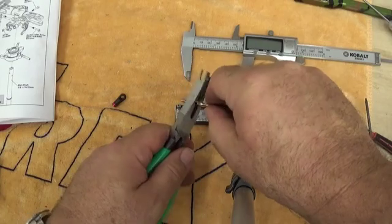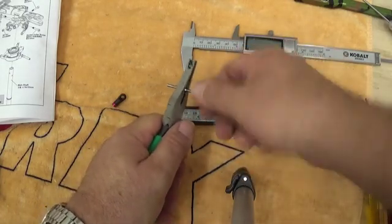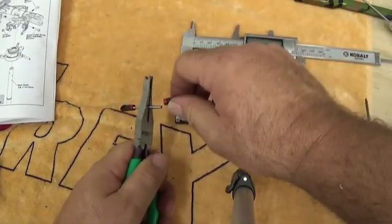Now I can grip the link with the ball link pliers here and start threading this down. Repeat the same for the opposite side.